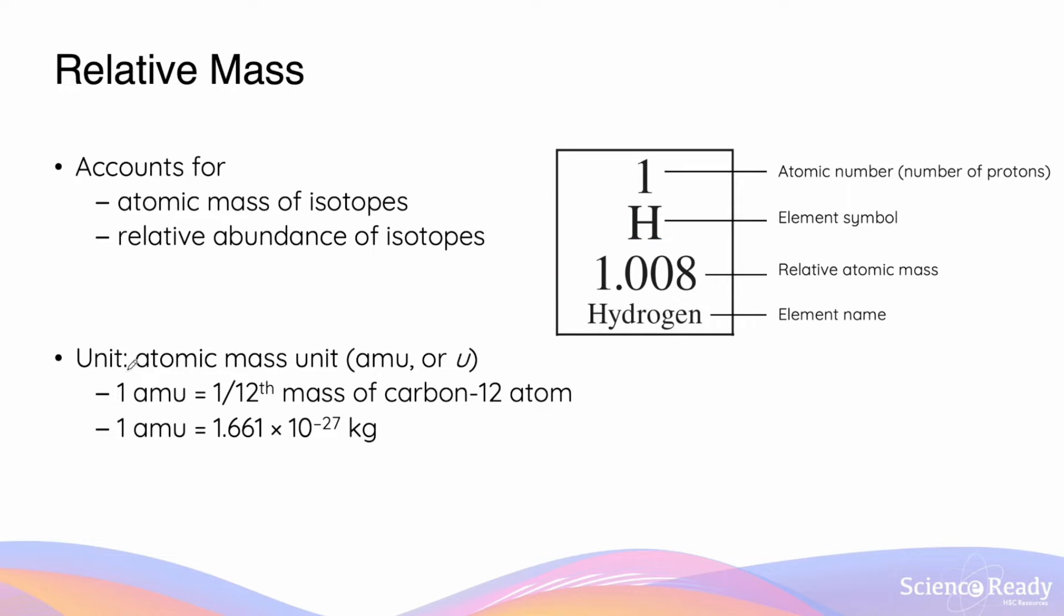The units for relative atomic mass is atomic mass units. This is often shortened as amu or simply u. Atomic mass units is defined such that it is equal to one-twelfth of the mass of a carbon-12 atom.